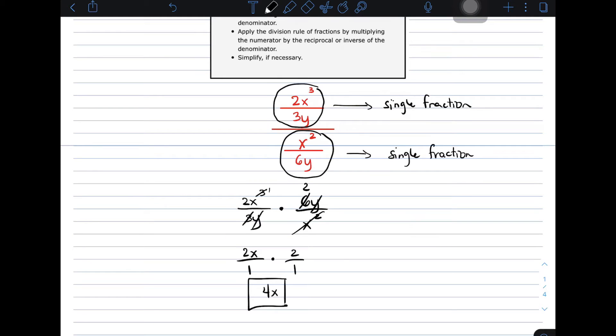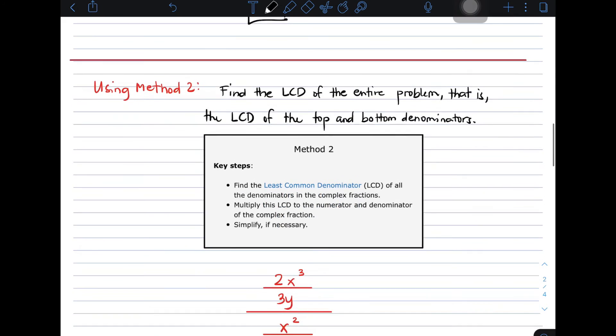Again, for method number 1, you need to secure whether the numerator and denominator are already expressed in a single fraction. And then, you will apply division rule. Multiply the numerator by the reciprocal of your denominator, and then simplify if necessary. Are we clear on that? And then, let's move on to method number 2.